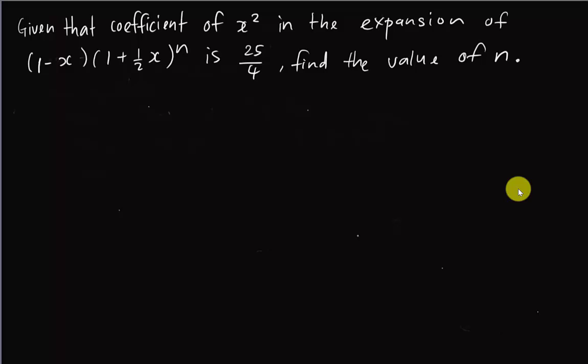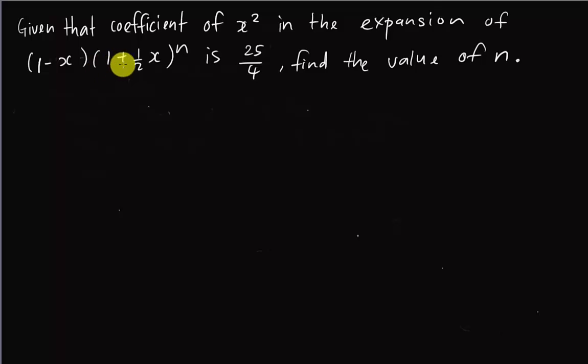I'm going to make a short video to explain how to find the values of n in the binomial theorem topic. This is also for IGCSE MF. One of the students asked, in case the power is n, how are you going to solve this kind of question? The question: given that the coefficient of x² in the expansion of (1 - x)(1 + ½x)^n is 25/4, find the values of n.